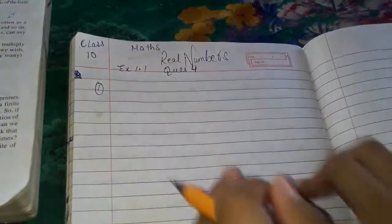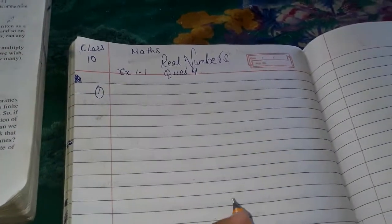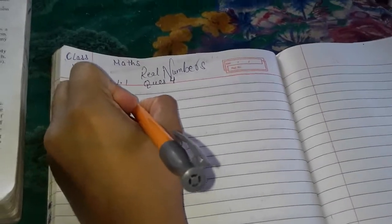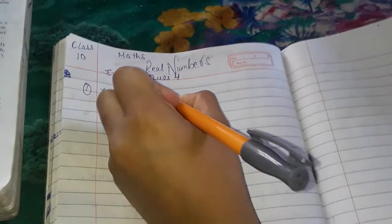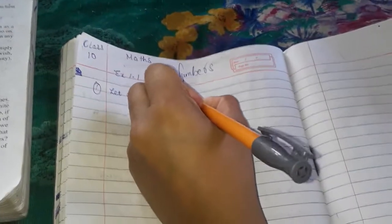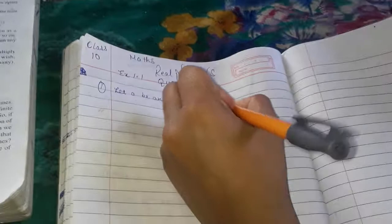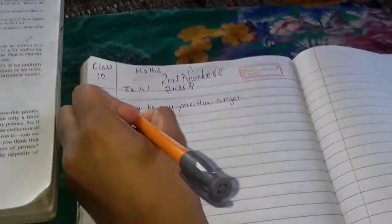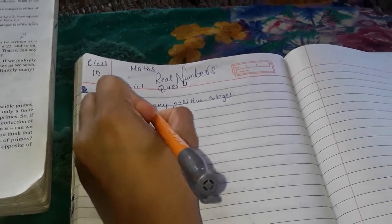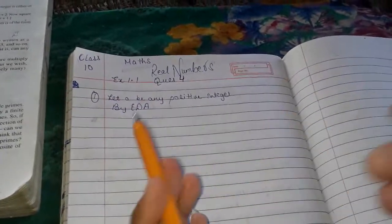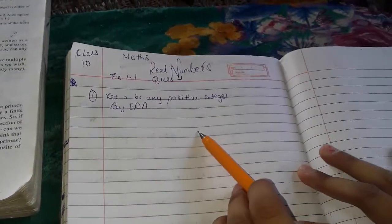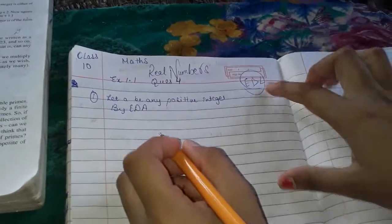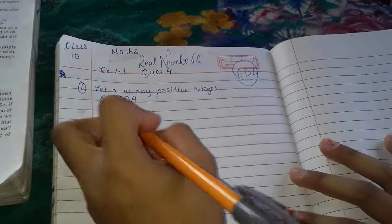Let's start this question. Let a be any positive integer. Now by EDA, we have to give the equation for Euclid's Division Algorithm.